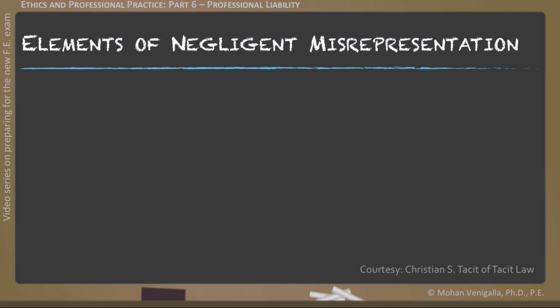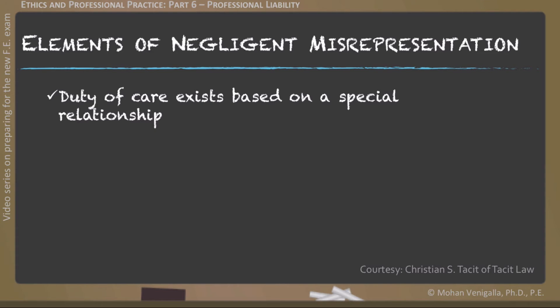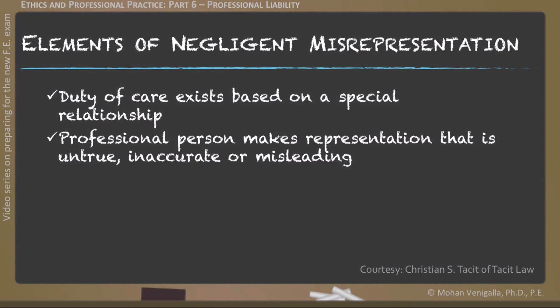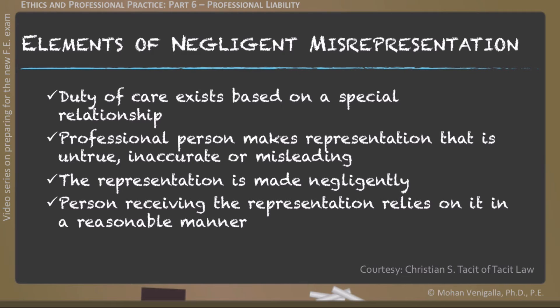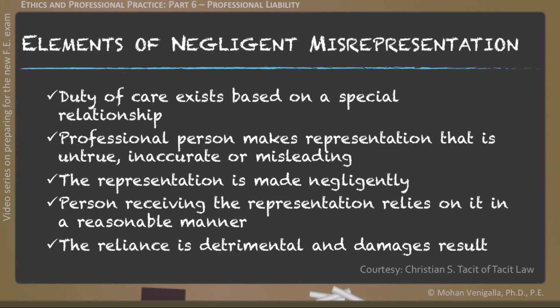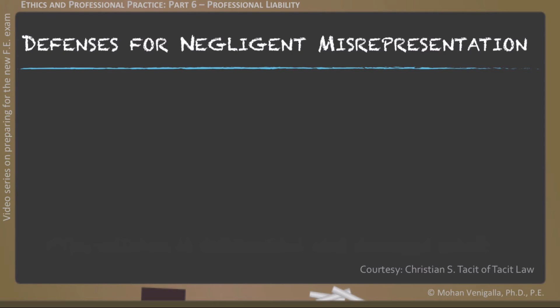What if a professional person makes a representation that is untrue, inaccurate, or misleading? Then that representation is made negligently. If the person receiving the representation relies on it in a reasonable manner, and that reliance turns out to be detrimental resulting in damages, that is known as negligent misrepresentation.